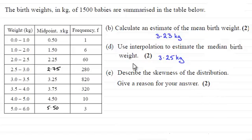I've just recapped here that in part B we had to estimate the mean birth weight, which was 3.23 kilograms, and in part D we had to use interpolation to estimate the median birth weight, which we found out to be 3.25 kilograms.